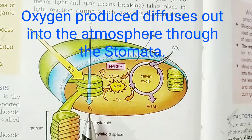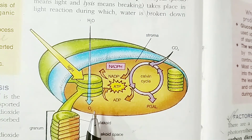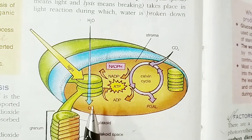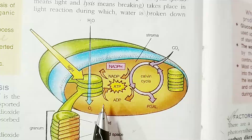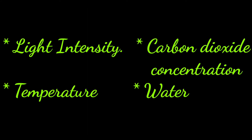This oxygen is used by all of us and other living organisms during respiration. I hope the process of photosynthesis and the steps — light reaction and dark reaction — are now clear. Now, what are the factors affecting photosynthesis? There are a number of factors affecting the rate of photosynthesis: light intensity, carbon dioxide concentration, temperature, and water.